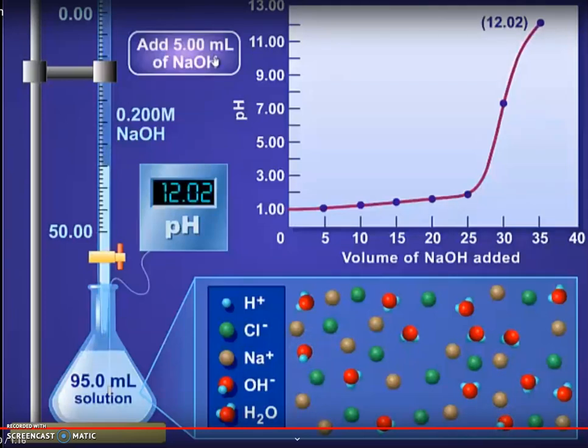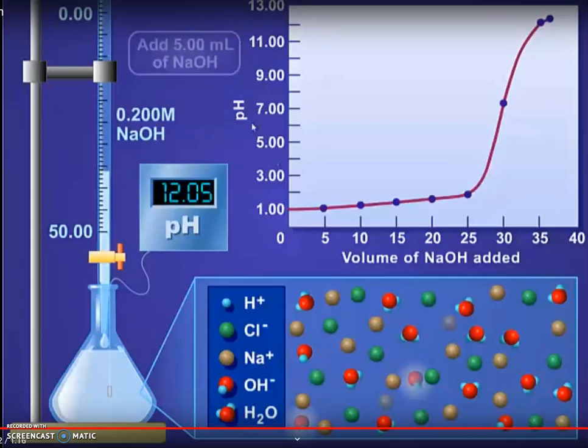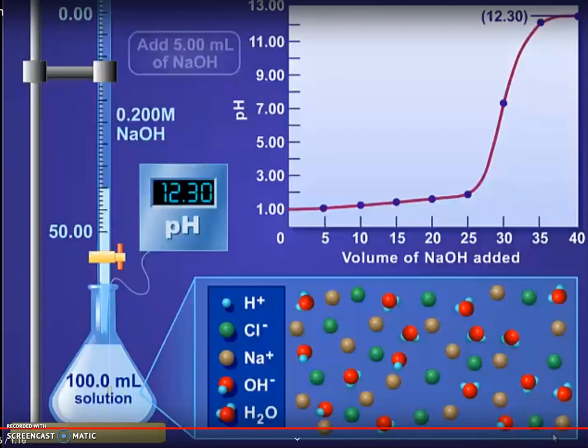This eventually levels out to approximately the pH of the NaOH itself. So the endpoint, how are you going to obtain it? Well, the endpoint is obtained from the midpoint of the steep part of the slope. We can come down off the graph and estimate the pH endpoint from the graph.